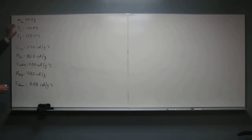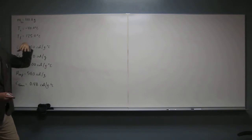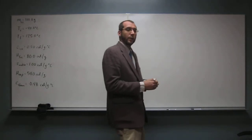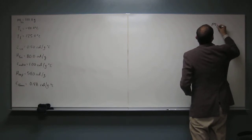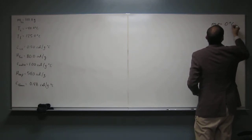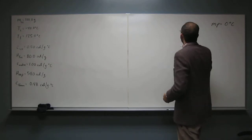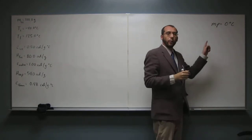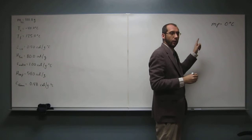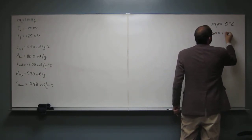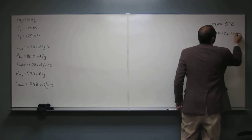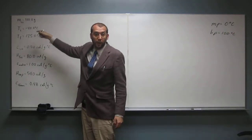The first thing we have to figure out is what temperature does ice convert to water — the melting point, which is zero degrees Celsius. And the boiling point of water is 100 degrees Celsius. We write both of those down because we've got to go through both of those transition points.